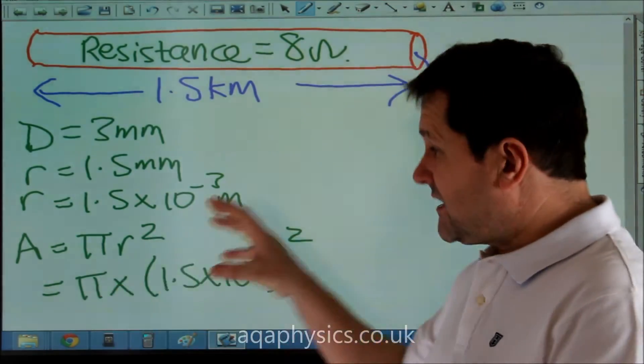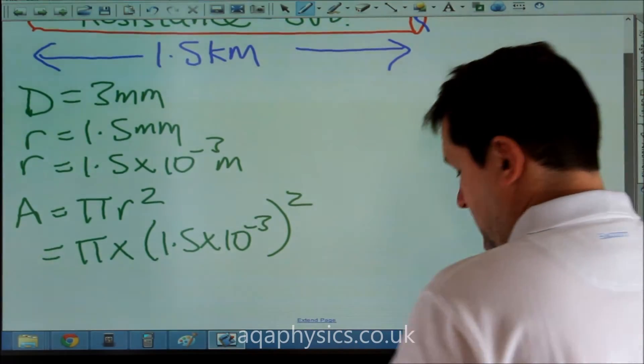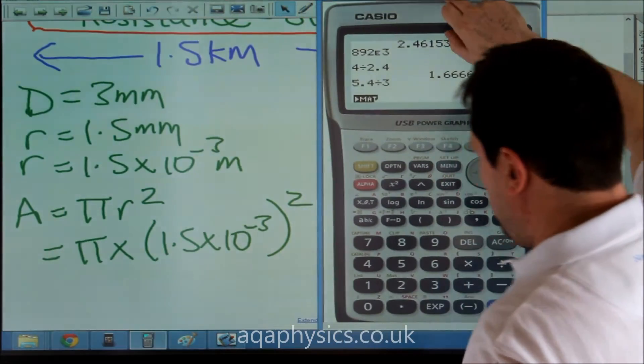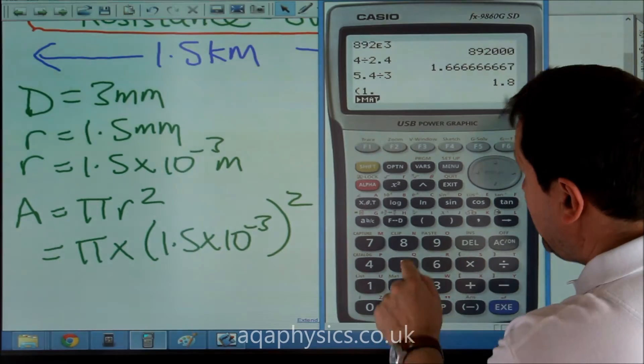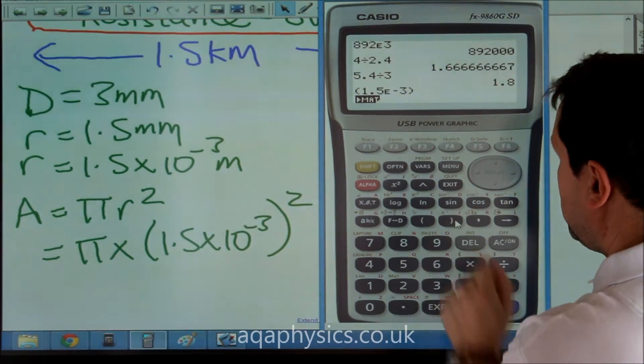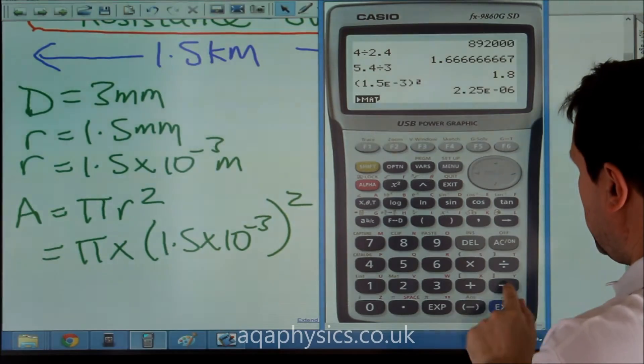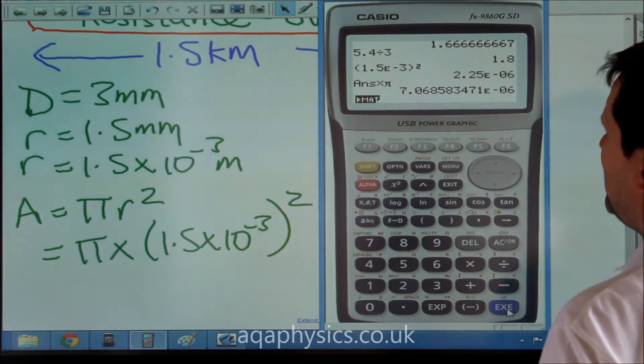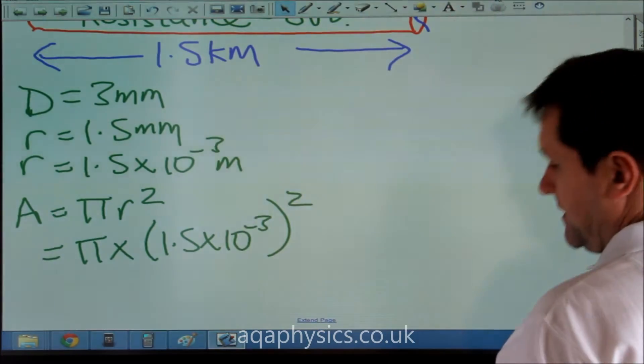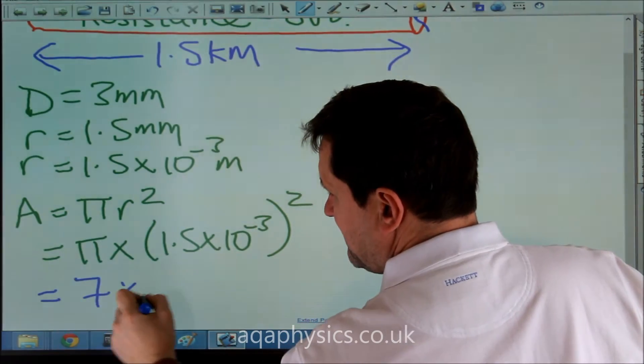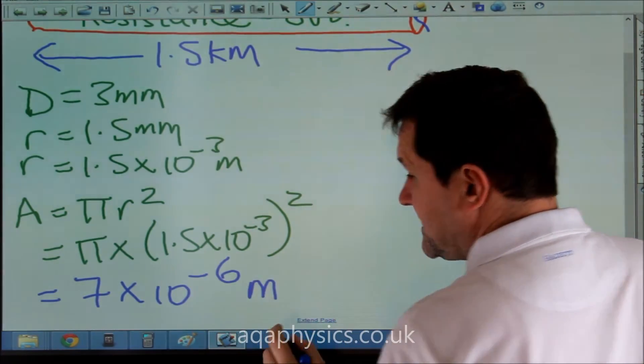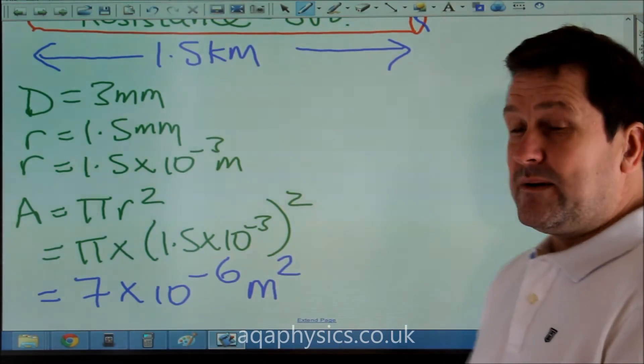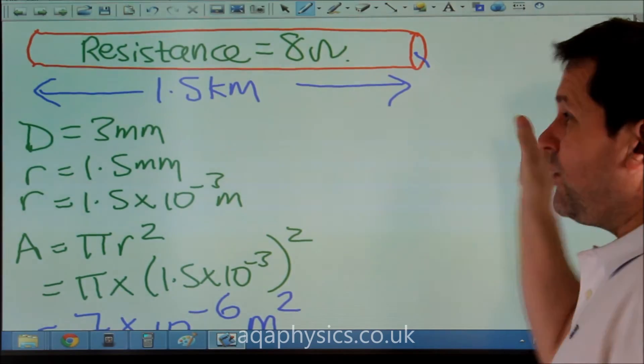Once I've worked that out, I'd write this down. I would then work that out and say, 1.5 times 10 to the minus 3 squared times π equals 7 times 10 to the minus 6. That equals 7 times 10 to the minus 6 meters. Because it's area, it's meters squared. So we know that's the cross-sectional area of that wire.